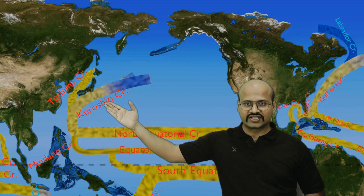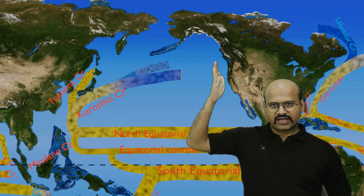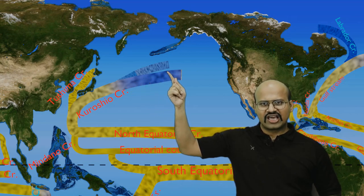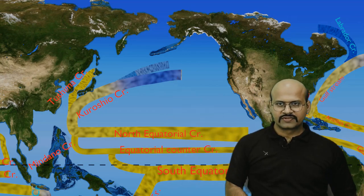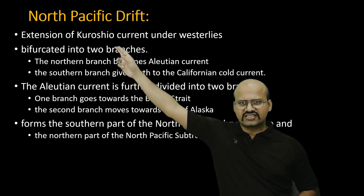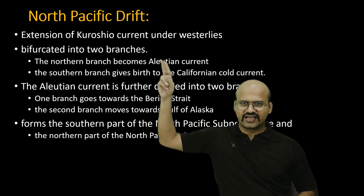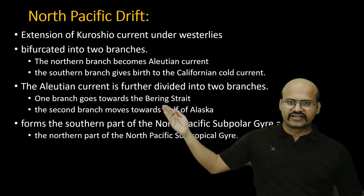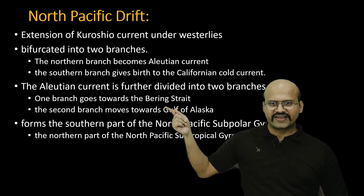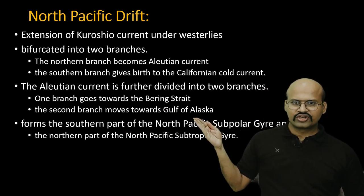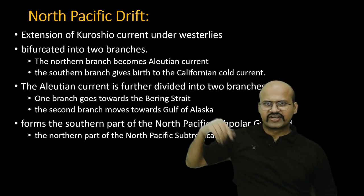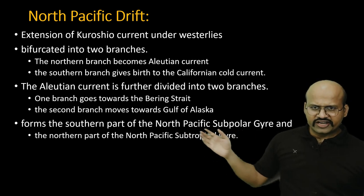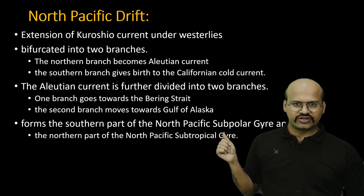Under the effect of westerlies, the Kuroshio Current is dragged in the northeastern direction; this extension is called the North Pacific Drift. The North Pacific Drift bifurcates into two parts: the northern branch is called the Aleutian Current and the southern branch is called the California Current. The Aleutian Current further divides: one branch flows into the Bering Strait (the Bering Current) and another moves toward the Gulf of Alaska (the Alaska Current). The North Pacific Drift also forms a gyre in the North Pacific polar region — called the North Pacific subpolar gyre — and is also part of the North Pacific subtropical gyre.